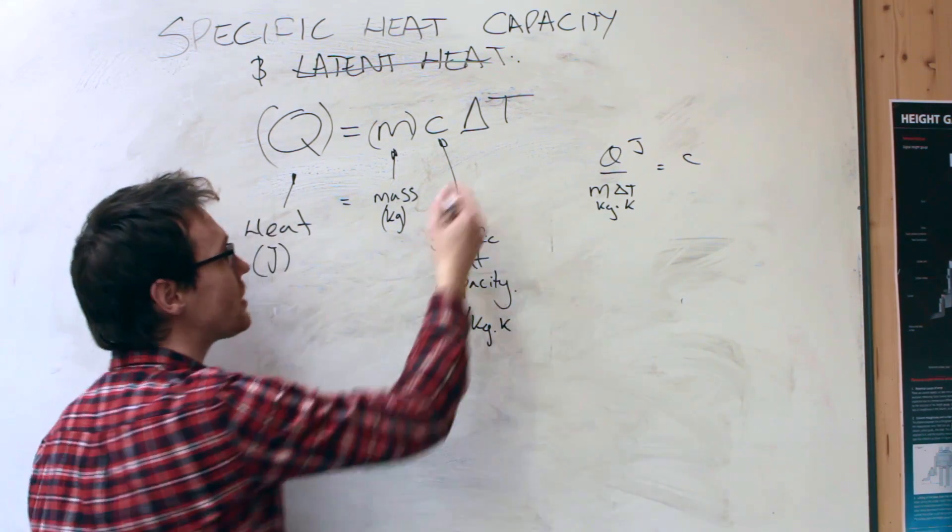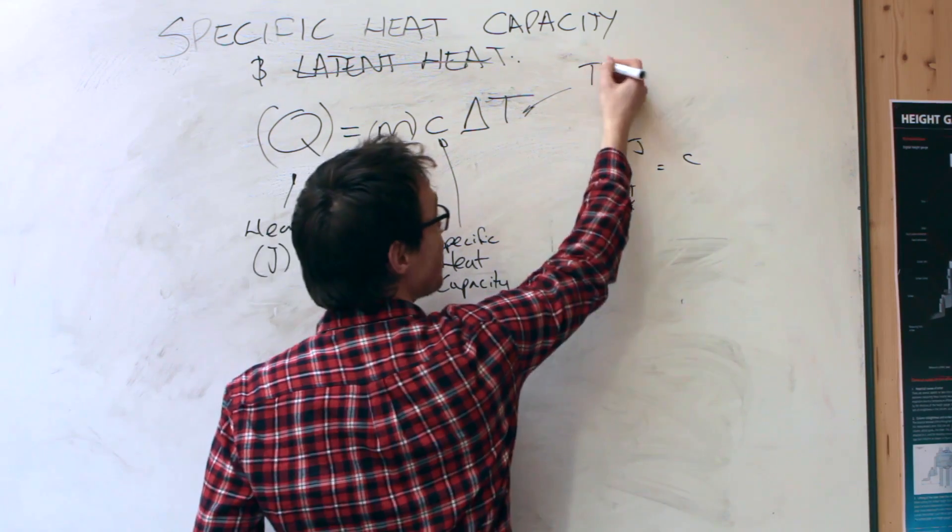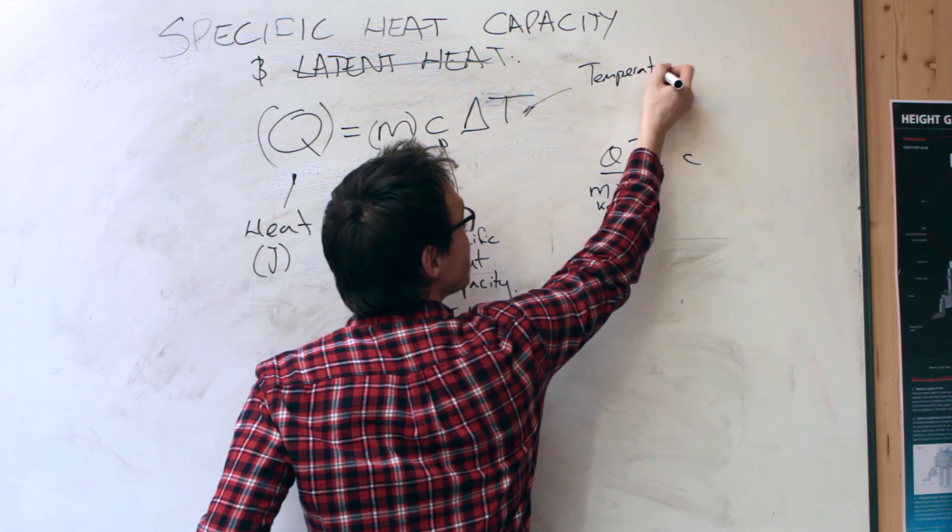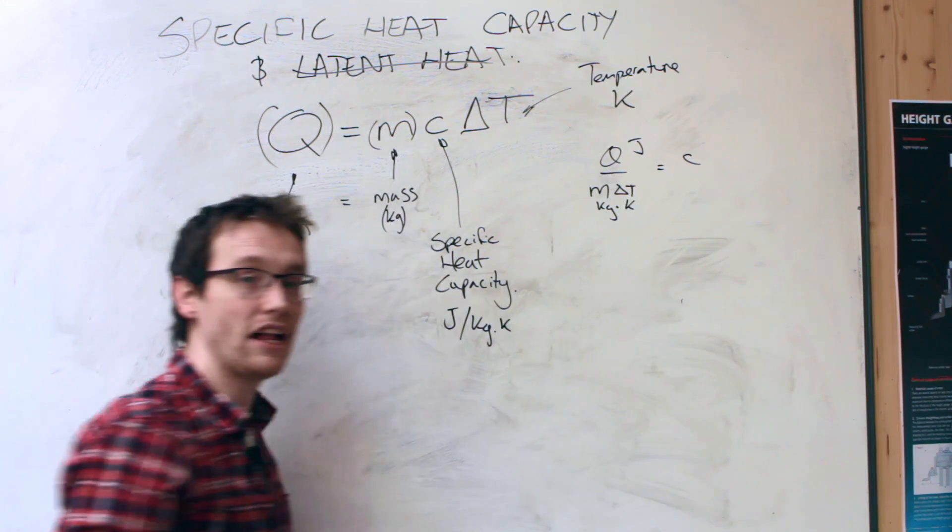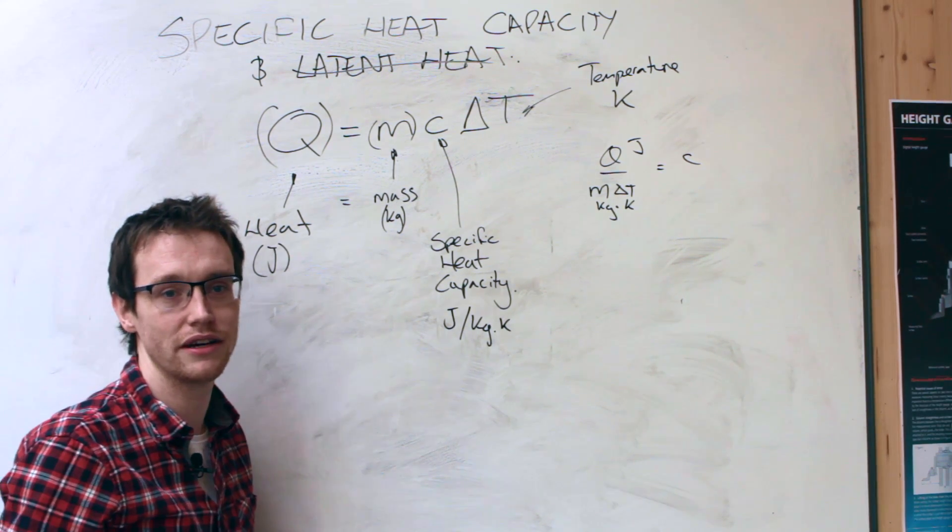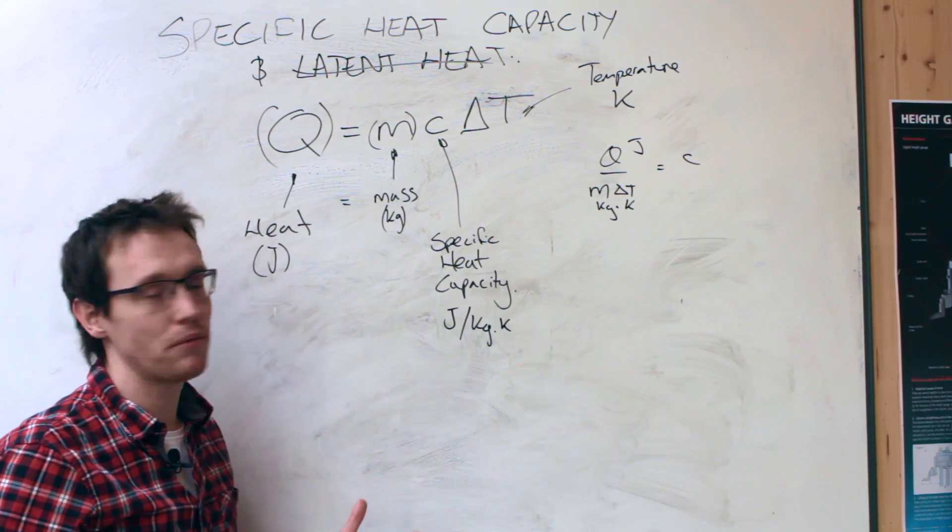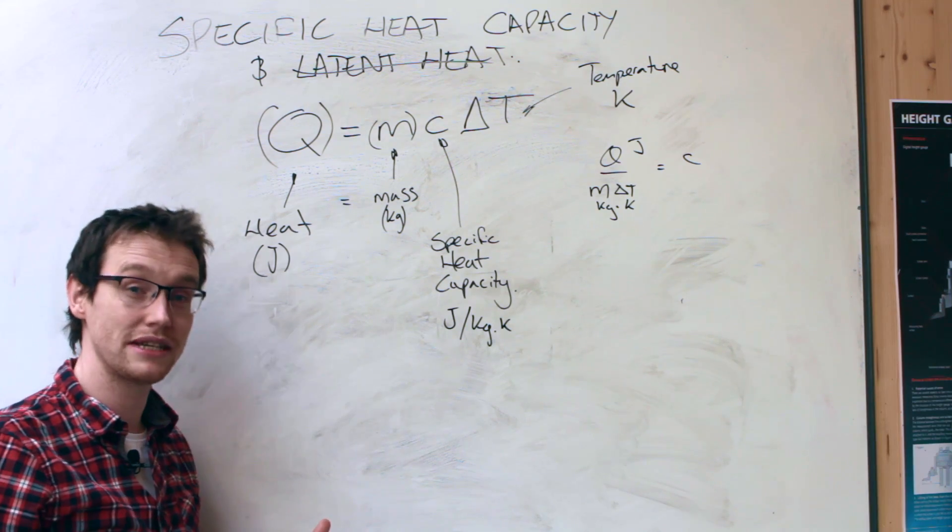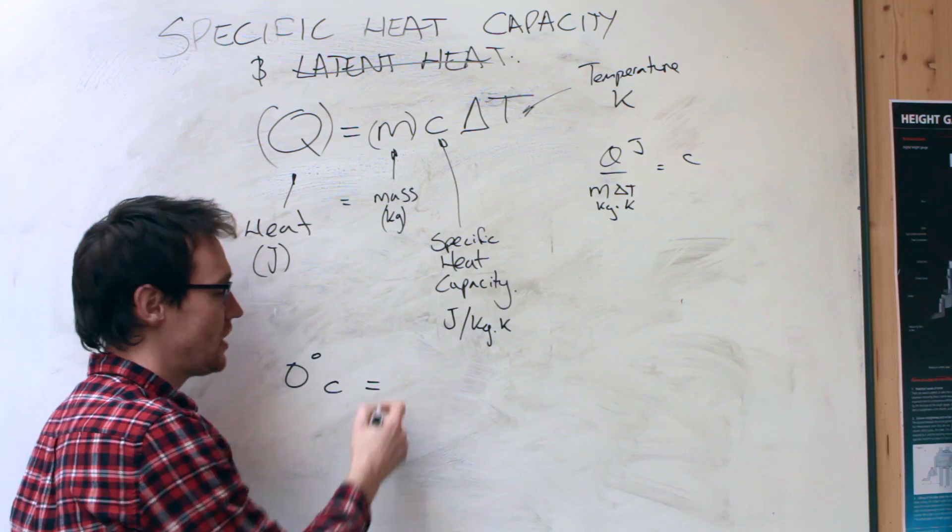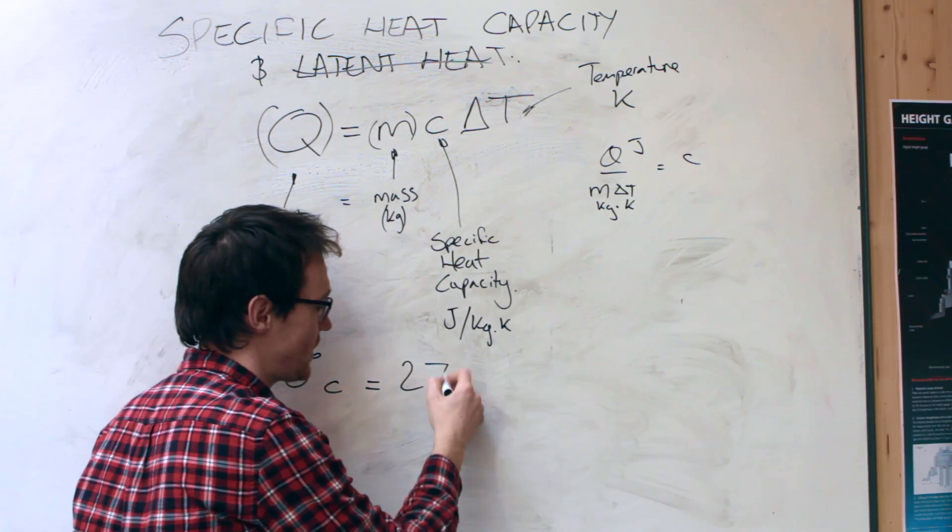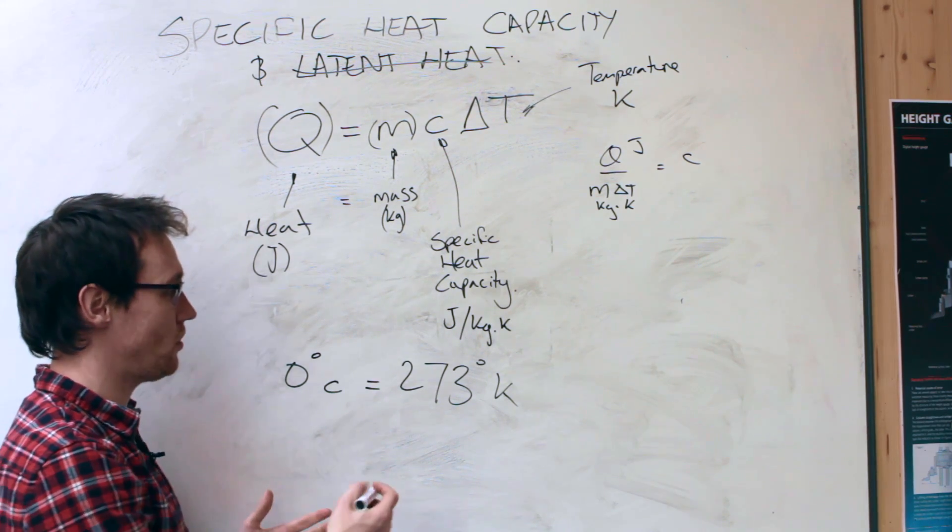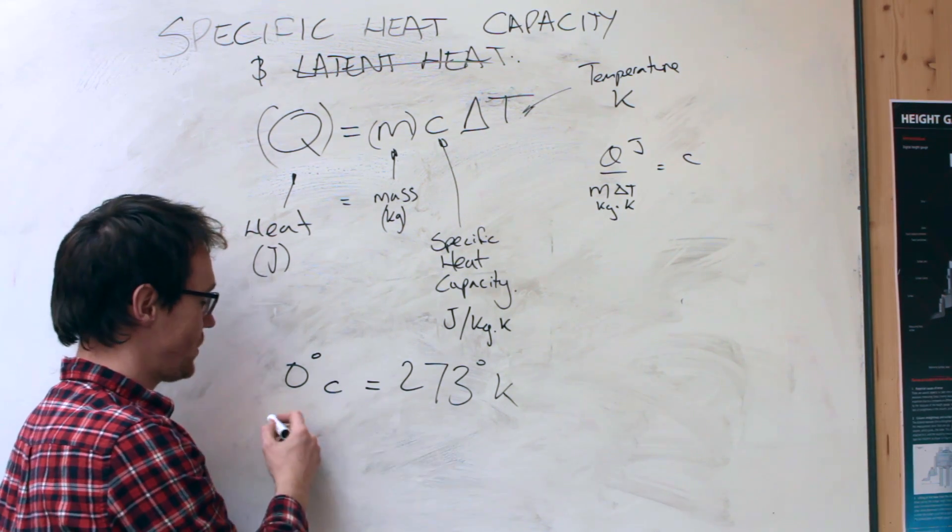Delta T is the temperature, not heat, temperature, measured in Kelvin. Though for most applications you can use the temperature in degrees C. The difference between degrees C and degrees Kelvin is 273. So zero degrees Celsius is the same as 273. So let's just do a quick example: if it was 100 degrees C, that would be 373 degrees Kelvin.